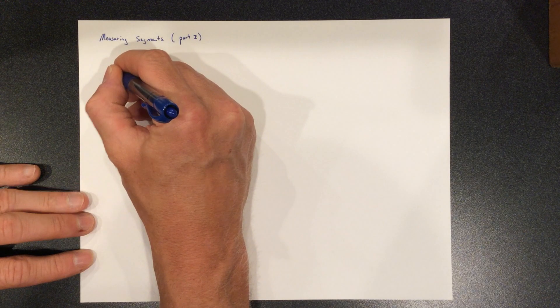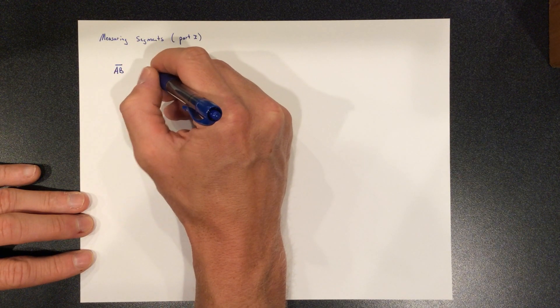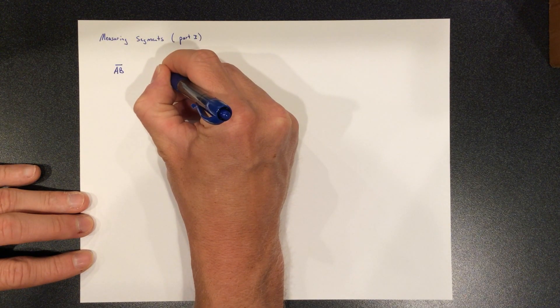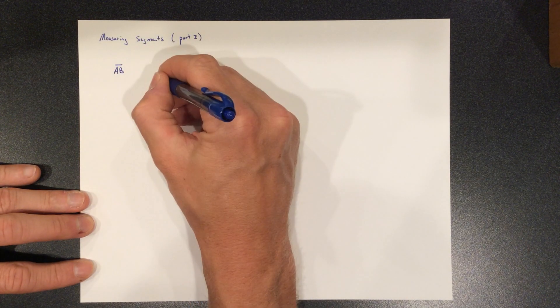Remember, a line segment, like line segment AB, it has a length measured in meters, feet, miles, centimeters, whatever you want it to be, right.